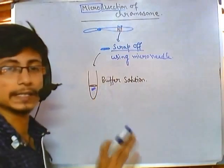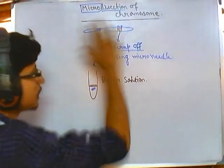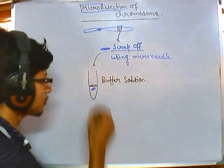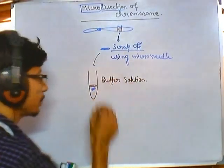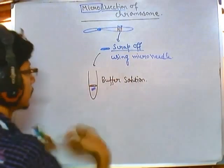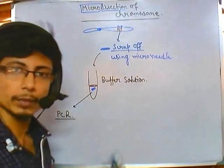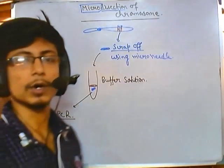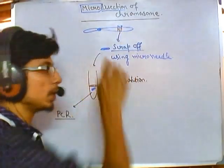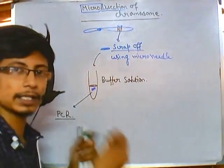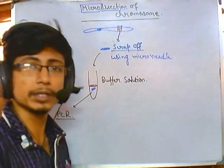What we do after micro dissection is important. Suppose we need to amplify a segment of a chromosome — we take it in the buffer and run PCR on it. For example, if we are comparing the chromosomes of two different individuals, we scrap off the segment from the exact same location on each chromosome, then run PCR and a gel to look for multiple nucleotide polymorphisms that may be present.